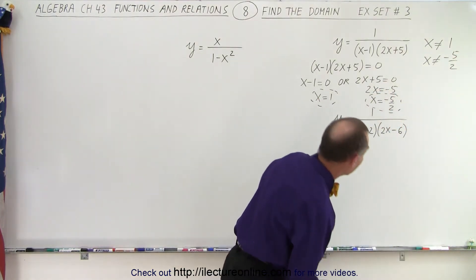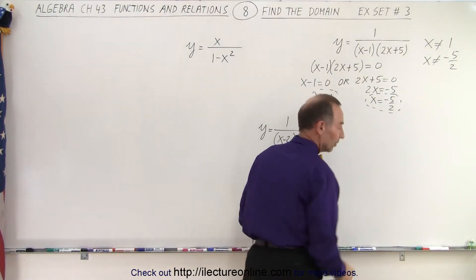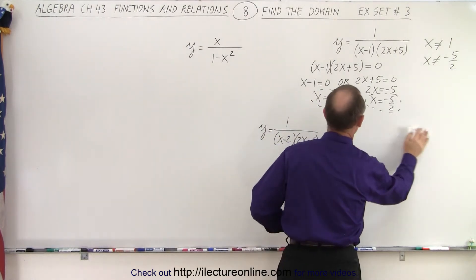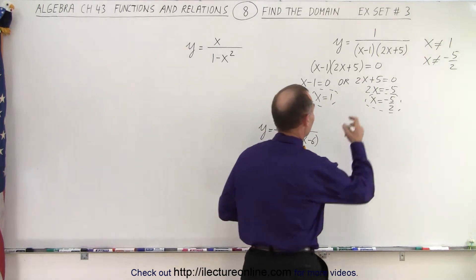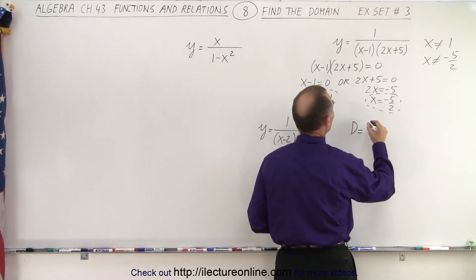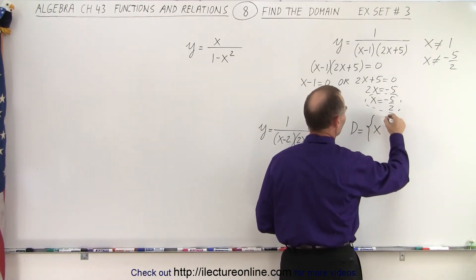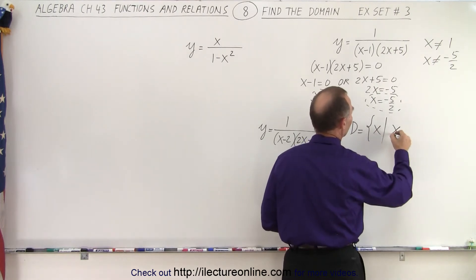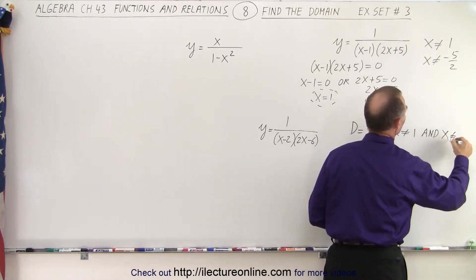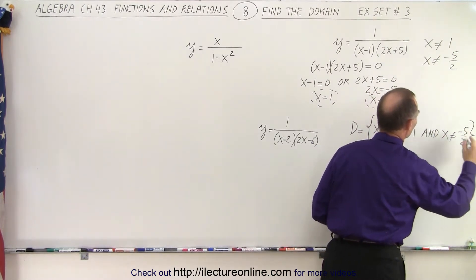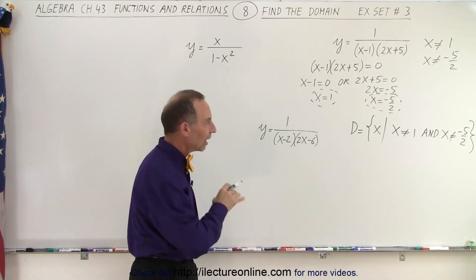So x should not equal 1 and x should not equal negative 5 over 2. Now that we've established all the values that x cannot be, we're ready to write the expression indicating the domain. For our first example, the domain is the set of all x's such that x is not equal to 1 and x is not equal to negative 5 over 2. Those two conditions must be true, but x can be everything else.